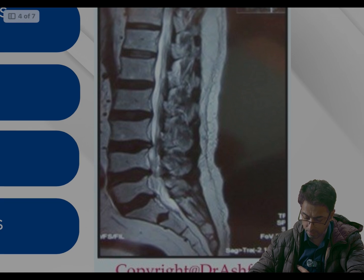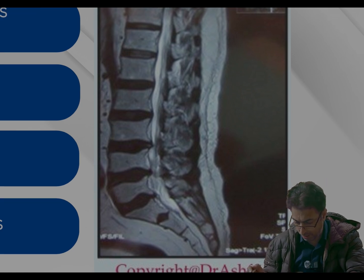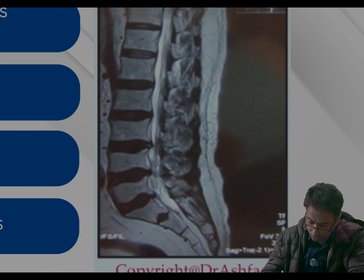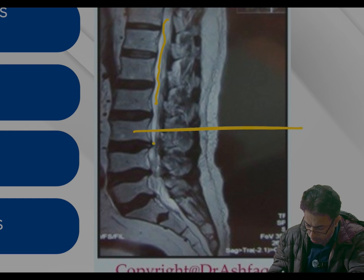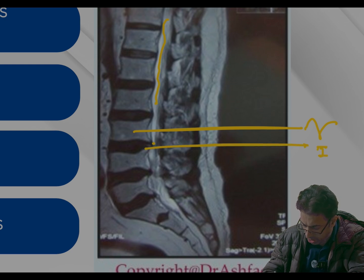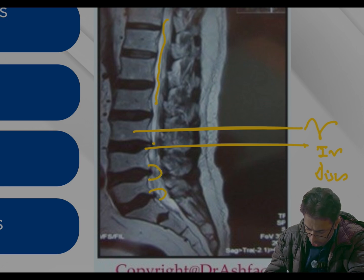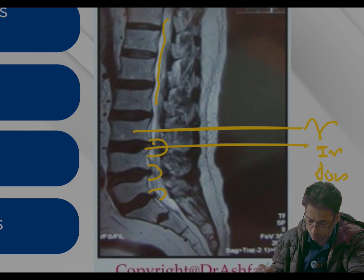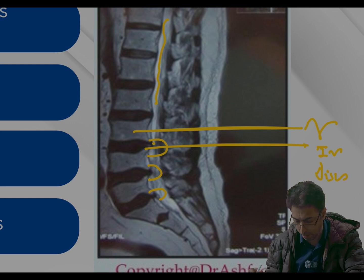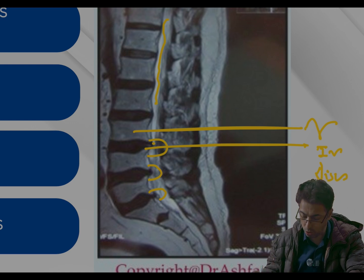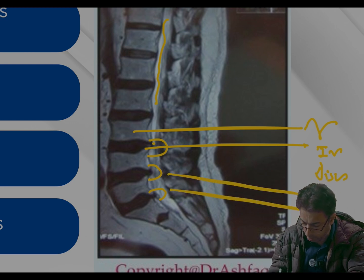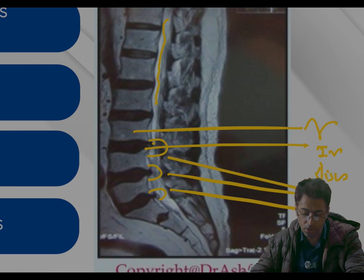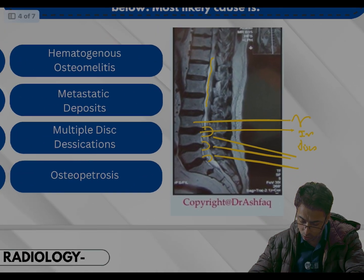Looking at the MRI image: this is the spinal cord, these are the vertebrae, and these are the intervertebral discs. You can see a protrusion of the disc at one level, another disc protrusion at the next level, and another disc protrusion here as well. So there are multiple disc protrusions visible. Going back to the options to narrow down the answer.